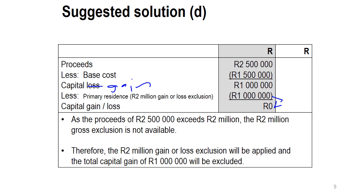This is what you should be able to do with a primary residence exclusion. The only way the question can be made more complex is by having you determine proceeds or base cost — for example, what amounts can form part of base cost, including improvements. Additionally, there can be more than one owner, in which case you divide the capital gain or loss between each owner and also apportion the primary residence exclusion accordingly. That concludes the video. Bye.